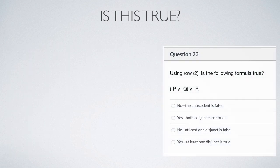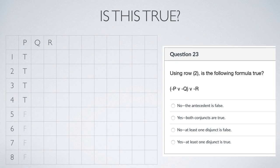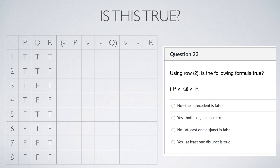Now we have three variables: p, q, and r. Following rule five we have eight rows. Applying rule six: the first four rows of p are true, the last four are false; then for q, half of those are true and half are false — copy and paste that down; then r just alternates true-false and we copy and paste that down. We put our formula in — it's a bit more complex this time with parentheses, so keep that in mind.